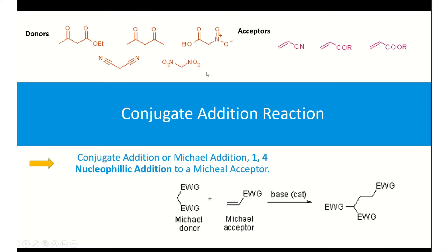First of all, look at these species here because they have what we call the acceptor. You recognize the acceptor as a type of alpha-beta unsaturated carbonyl — in this case a ketone, or in this case an unsaturated ester. These act as your Michael acceptor. On the other hand, you have your donors — species which are precursors to your enolates and will act as your donor.